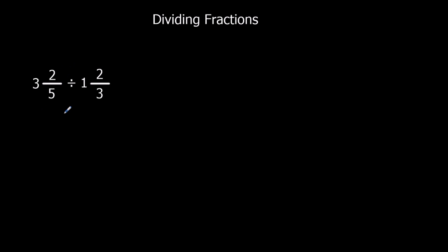So this is a mixed number problem. The first thing we've got to do is change them to top-heavy fractions. So I've got 3 whole ones and they're in fifths — that's 15 parts there, plus another 2, so 17 fifths. Divided by 1 whole one, that's in thirds — so that's 3 plus 2, which is 5 thirds.